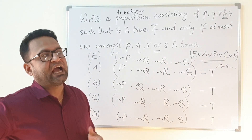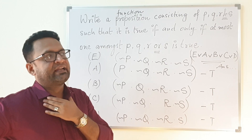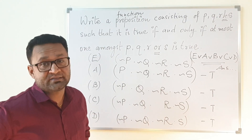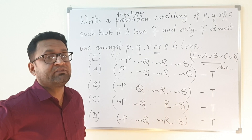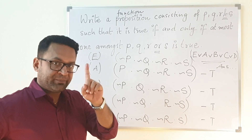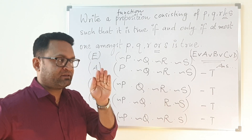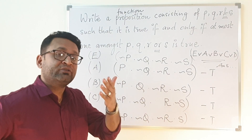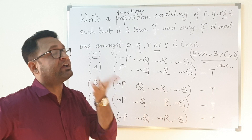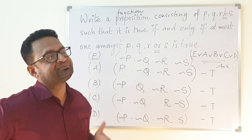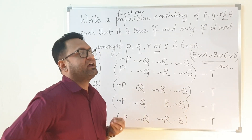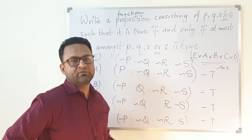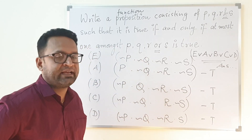The idea was to understand this as a circuit analogy — current will flow only when one of the switches passes the current; the rest all will be in a closed or open state. You need to develop a function with the help of four variables: P, Q, R and S.